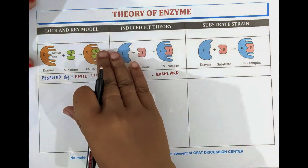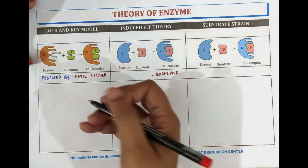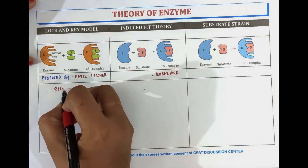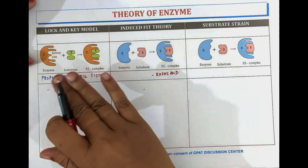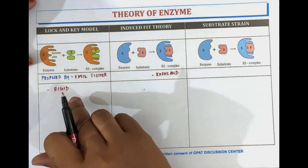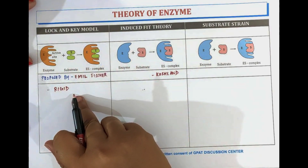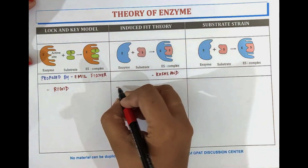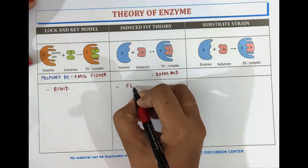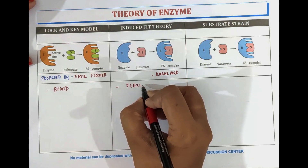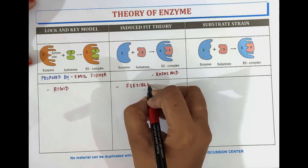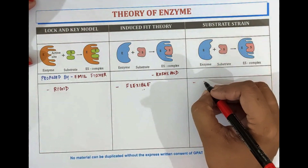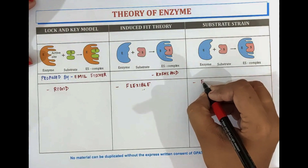In the lock and key model, it is assumed that the enzymes have a rigid structure. In the induced fit theory, it is assumed that enzymes have a flexible structure. And in the substrate strain theory, it is also assumed that enzymes have a flexible structure.